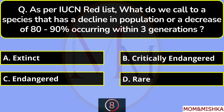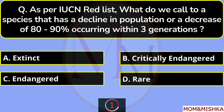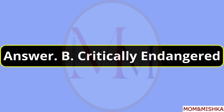As per the IUCN Red List, what do we call a species that has a decline in population or a decrease of 80–90% occurring within 3 generations? They are critically endangered, option B.